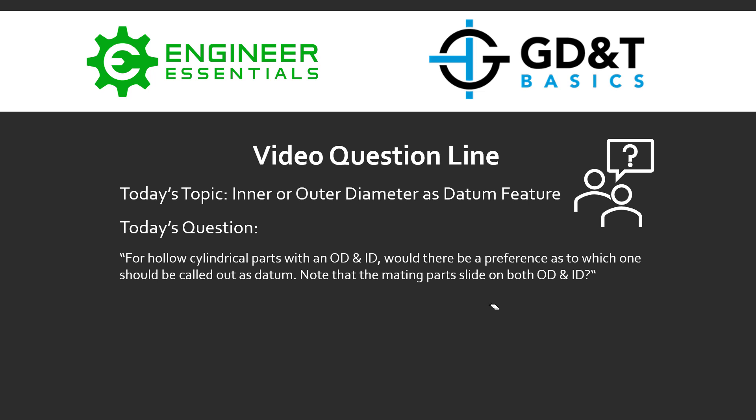If you've taken any of our courses, you know that we suggest when selecting datums, those datums come from datum features and those features should be features on the part that mate with other parts in the final assembly. Datums should mimic the functional intent of the part. If you pick the datums correctly, we are essentially setting up a mock inspection that mimics the final assembly.